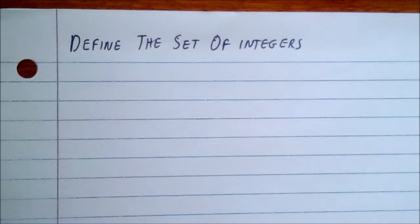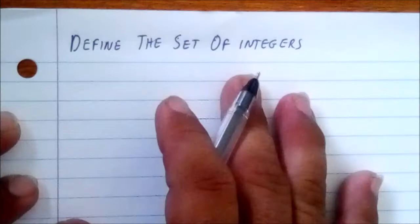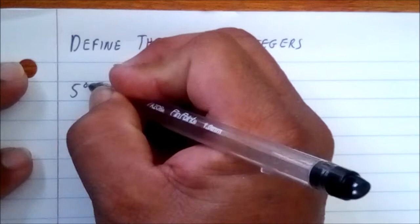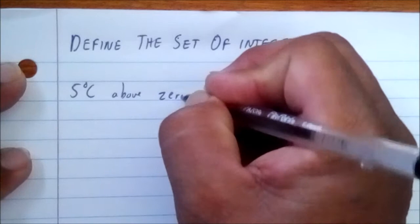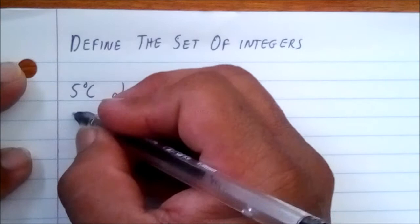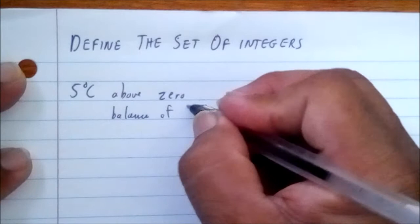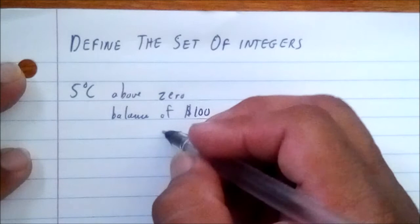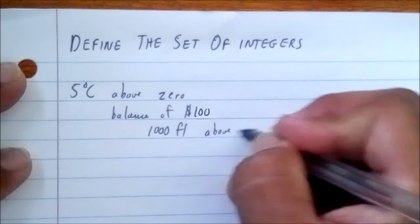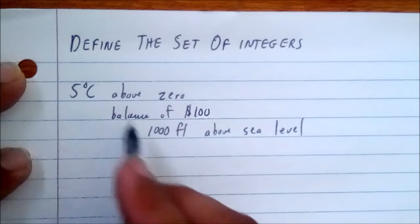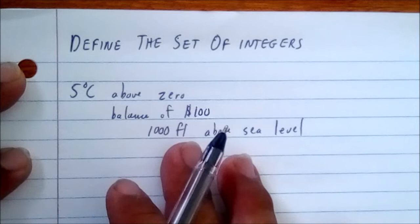We start with our first part: define the set of integers. When we describe temperatures below zero or above zero, we need to write it a certain way. Temperatures of five above zero, a balance of a hundred dollars, or a thousand feet above sea level — we can use numbers called positive numbers to represent that information. These are examples of usage of positive numbers, where we can use integers to represent them.